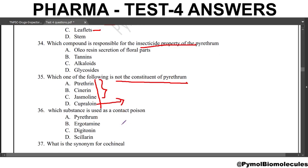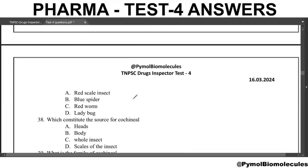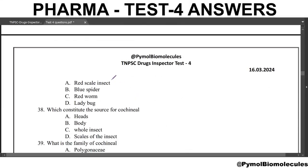Next question: which substance is used as a contact poison? The drug pyrethrum is used as a contact poison. Next question: what is the synonym of cochineal? The answer is red-scale insect.